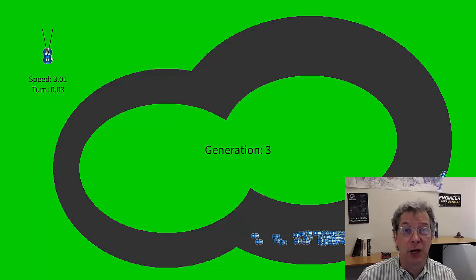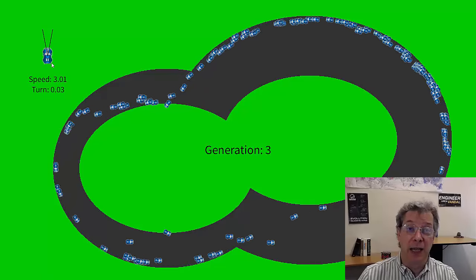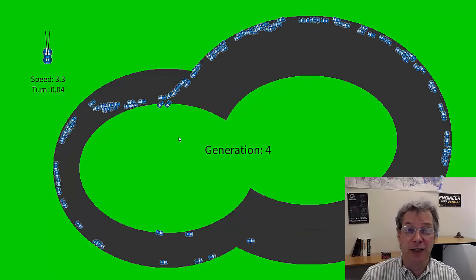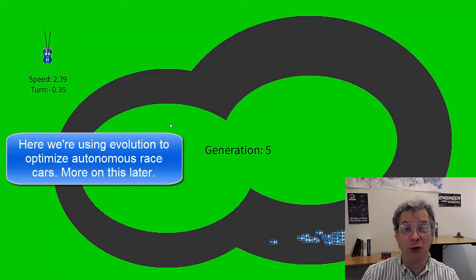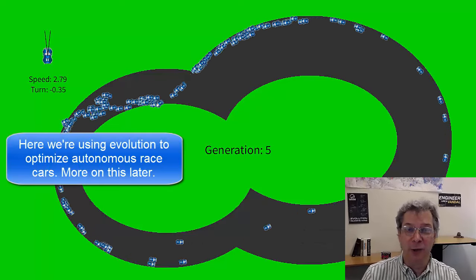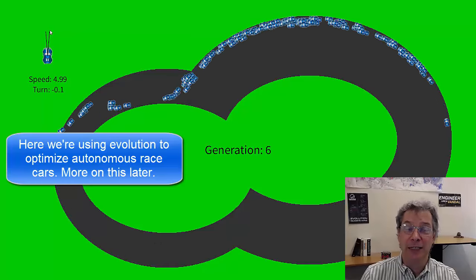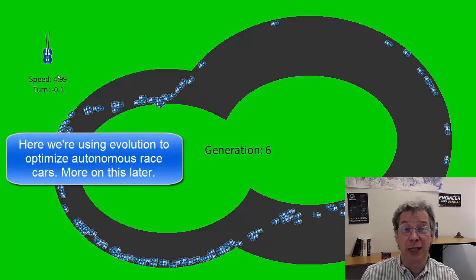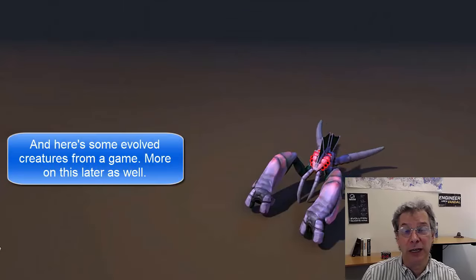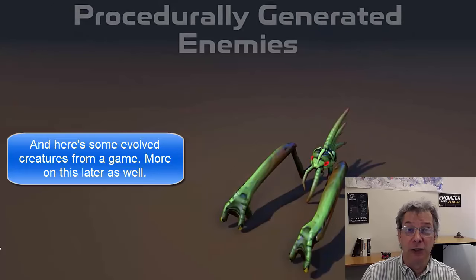Genetic algorithms are optimization algorithms that are based on biological evolution. The basic idea is evolution has done a fantastic job of evolving all sorts of complex creatures that are well adapted to their environment. Why can't we take that same idea and apply it in computer science? So in order to understand how these algorithms work, we need to think a little bit about what components go into biological evolution.